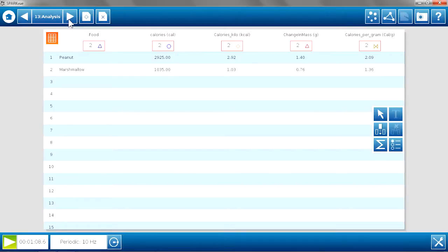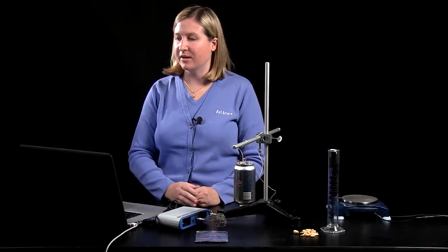So if you look at the last column of the data table, the calories per gram for the peanut was 2.09. And for the marshmallow, it's 1.36. So students can see that there's a definite difference between a food that is mostly sugar, like the marshmallow, to a food that has a lot of fat content, like the peanut.